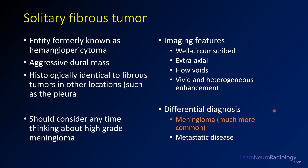If you're thinking about the differential for these, you're probably going to think about meningioma. These are much more common, so if meningioma is a choice you probably want to go with it and you won't know until you do a biopsy. You might also think about metastatic disease, lymphoma, or myeloma as other considerations, but meningioma is really the primary differential consideration.